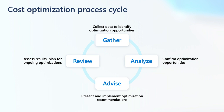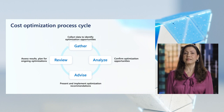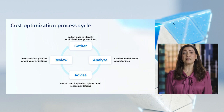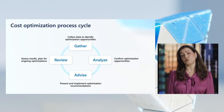This slide describes the cost optimization process cycle. We focus on five steps, with the fifth step empowering you to continue the process internally with your teams. First, you'll want to gather and analyze data to identify and confirm optimization opportunities. Decide on which opportunities to pursue and implement them. Then set up reviews going forward. Once the first optimization efforts are completed, document and institutionalize the process with the core team.